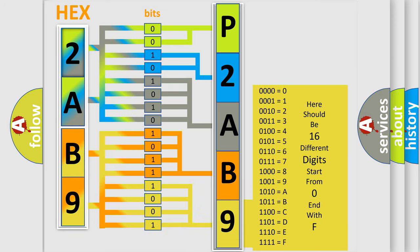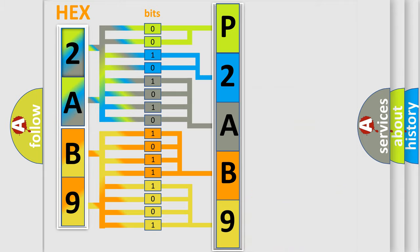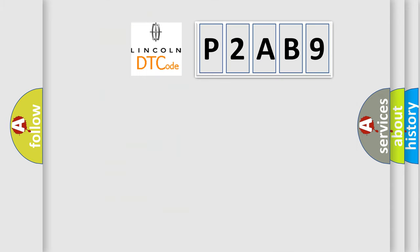We now know in what way the diagnostic tool translates the received information into a more comprehensible format. The number itself does not make sense to us if we cannot assign information about what it actually expresses. So, what does the diagnostic trouble code P2AB9 interpret specifically?